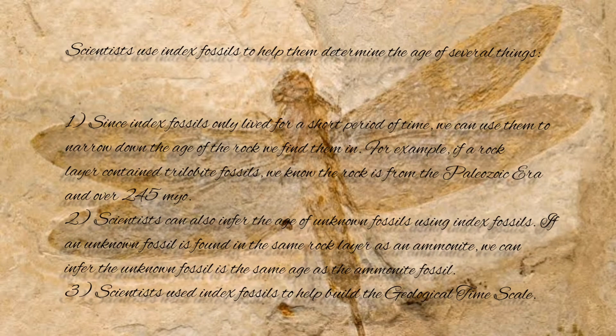Scientists use index fossils to help them determine the age of several things. First, since index fossils only live for a short period of time, you can use them to narrow down the age of the rock you find them in. For example, if a rock layer contains trilobite fossils, we know the rock is from the Paleozoic era and over 245 million years ago.